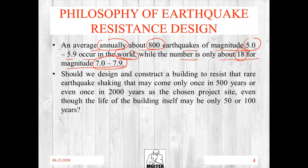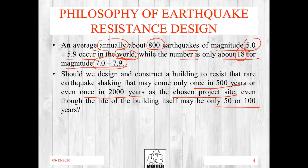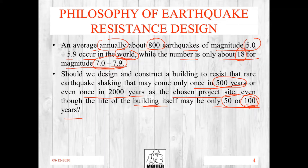In India, a major earthquake occurs only once in 500 years or even once in 2000 years for a chosen project site. A building's lifespan is only 50 to 100 years. So if you construct a building with a 100-year lifespan, a magnitude 7 to 7.9 earthquake may not occur during that period because it only occurs once in 500 years. This is called a rare earthquake.